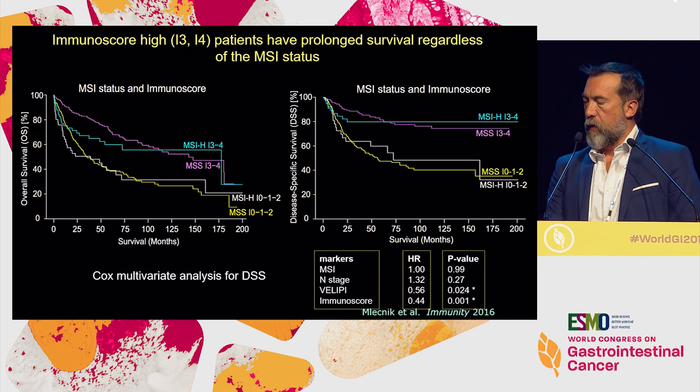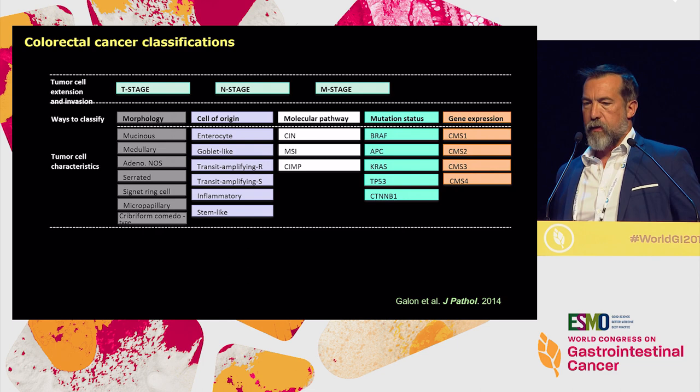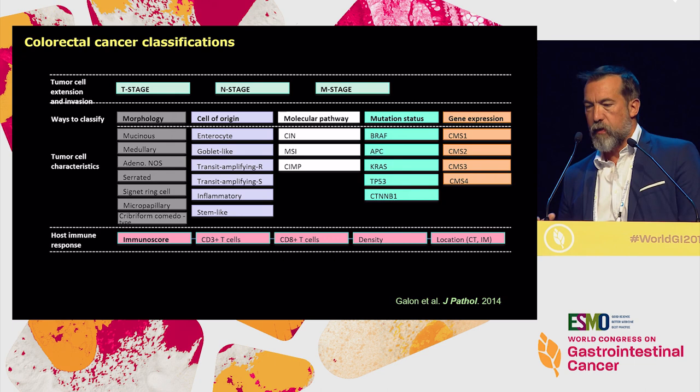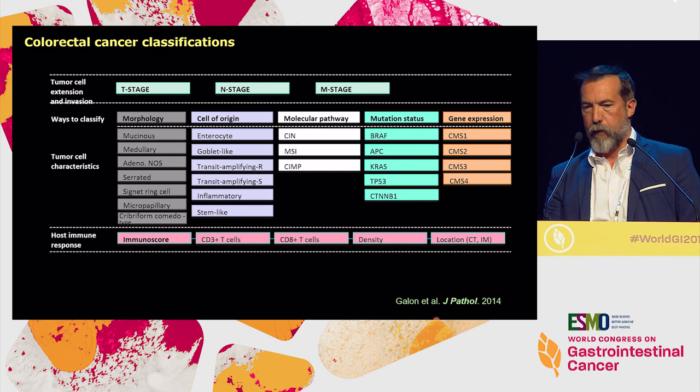In the current situation, staging is based on TNM, morphology of tumor cells, classification of cell of origin, molecular pathways, and mutations — but there is not a single assay to tell us about the immunity of the patient. The idea behind immunoscore is to simplify it and bring it to the clinic by doing easy histopathological stains, quantifying density, and taking into account location. We propose introducing into the cancer classification an 'I' — like a TNM-I classification, a TNM immune classification.